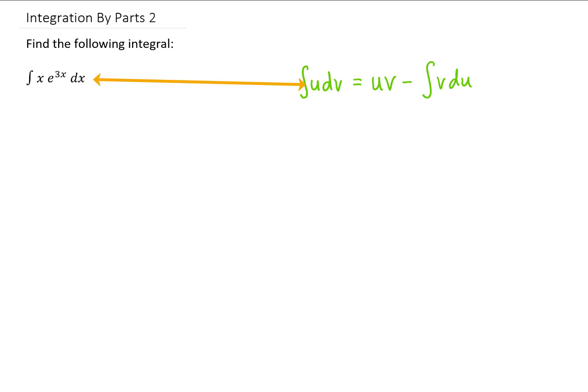When integrating by parts, we need to choose a u and a dv from our original integral, and typically we choose a u so that the derivative of that du is going to be simpler than u itself.